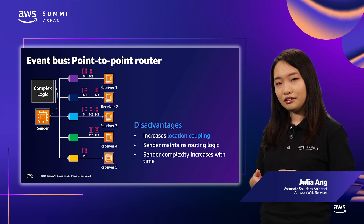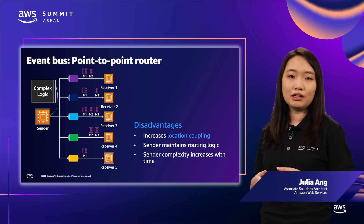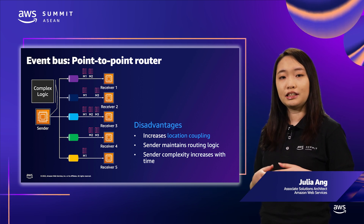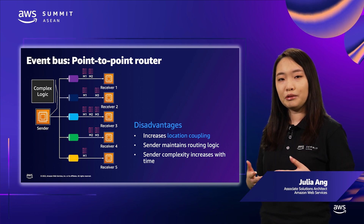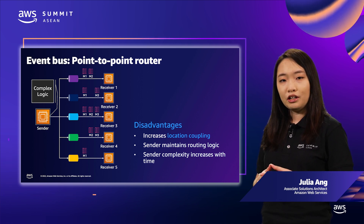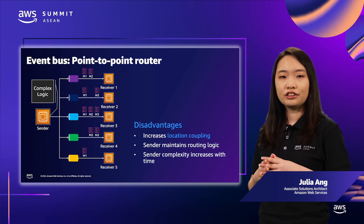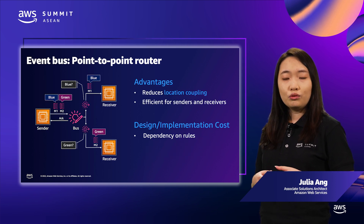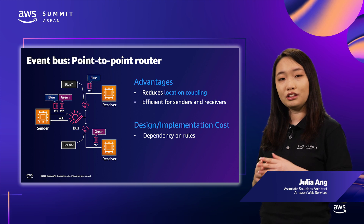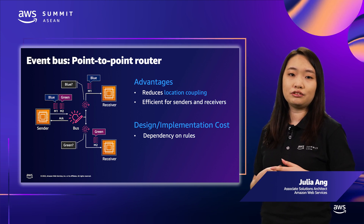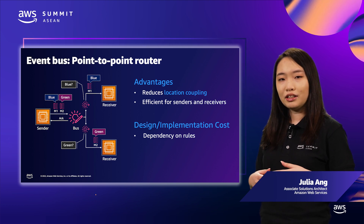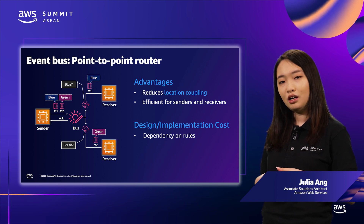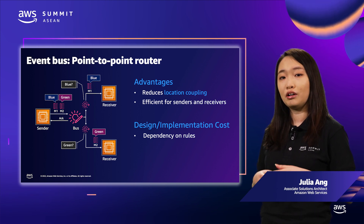Embedding the routing logic within the sender application code quickly gets hard to scale as you add more receivers and message types. Every time you add another receiver or a new message color, you have to update the sender code — this increases location coupling. By location coupling, we mean the sender has to know the address or location of all downstream receivers. We can handle this by offloading the routing logic and delivery to a dedicated message router or event bus.